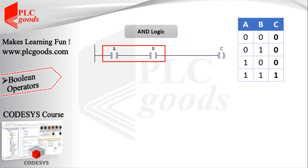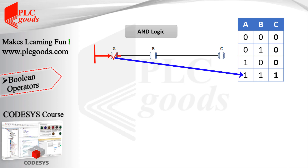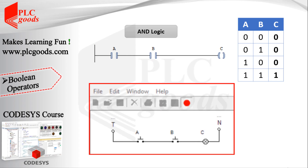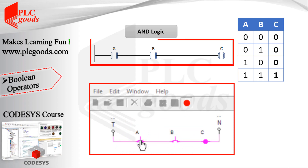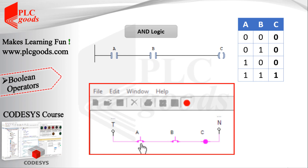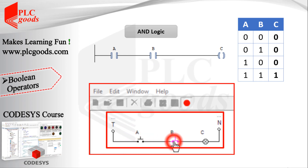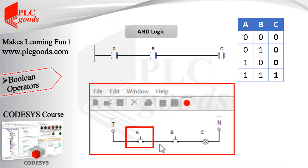For example, I can change this program easily and use A and B contacts in this form to turn on the output C. This program is known as AND logic, because the output will be on if and only if both contacts A and B are activated. At the bottom, its equivalent circuit is shown for testing. Compared to the previous slide, the PLC program has been changed easily, but the electrical circuit wiring has also been changed and a normally closed push button has been replaced by a normally open type.